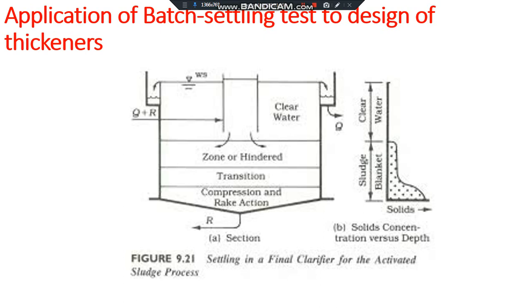Since it is a continuous process, unlike the batch experiment where the height changes across zones, in the continuous process the height remains essentially constant because it is a steady-state process. At the top you always get the clear zone, followed by the zone of hindered settling, then the transition zone, and finally the compression zone or sludge which is collected at the bottom of the thickener.